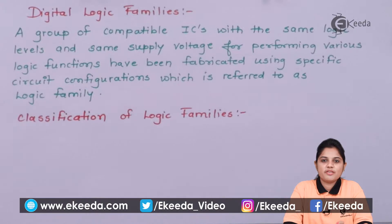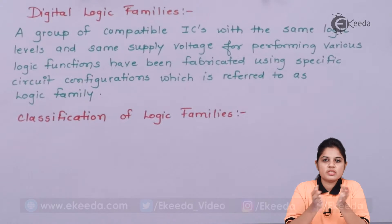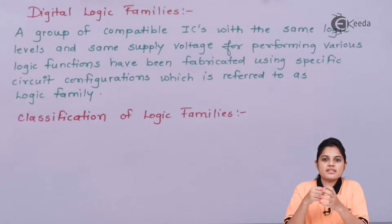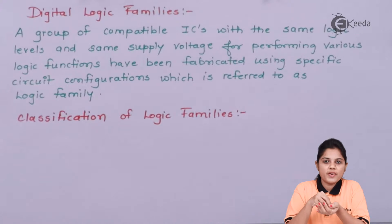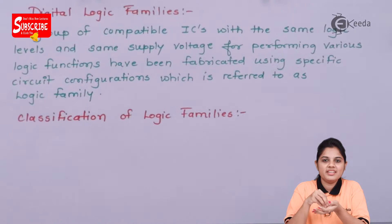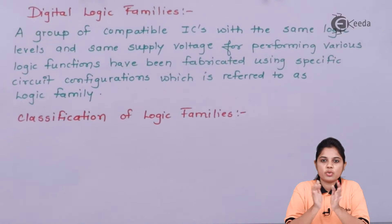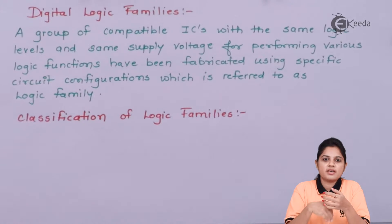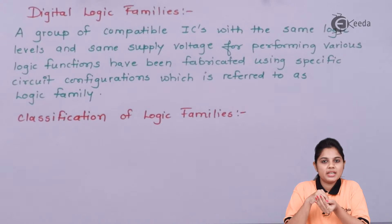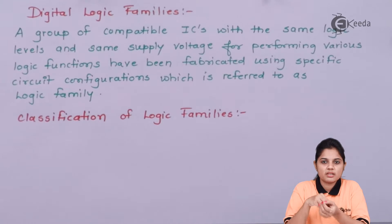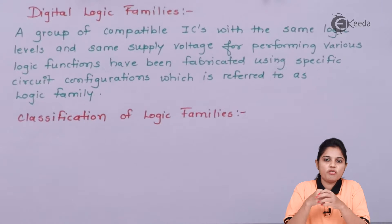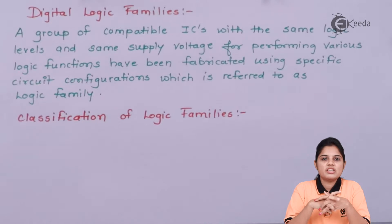Just as we all have families — different members staying together in one family with a common surname — that surname defines the type of family and the members in it. Similarly, in circuits we have a family where different components are fabricated together, but they share the same supply voltage and the same logic levels, and they can work together to perform some kind of operation. This is what we call a digital logic family.